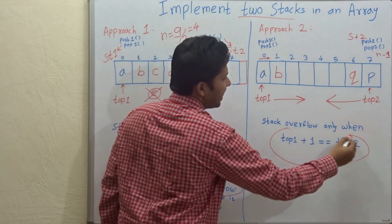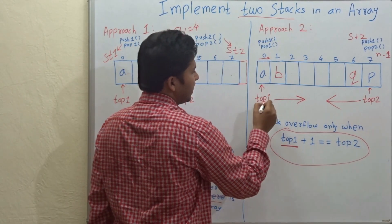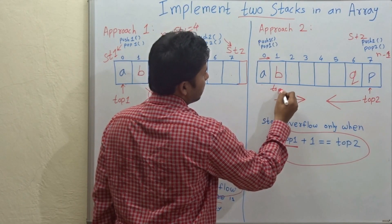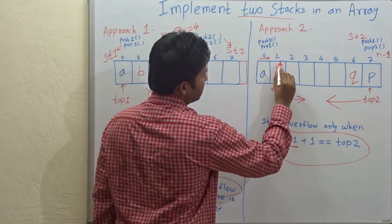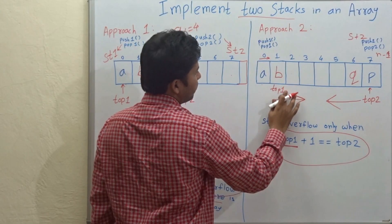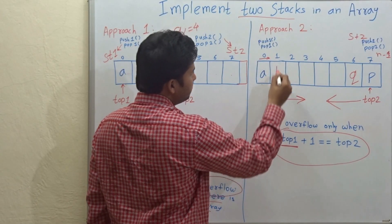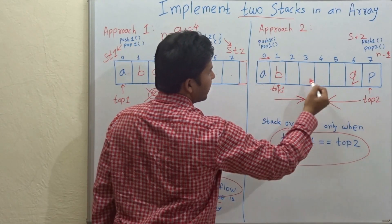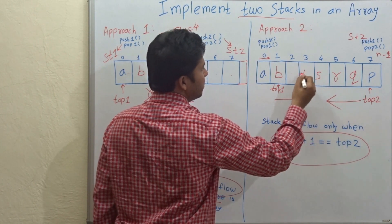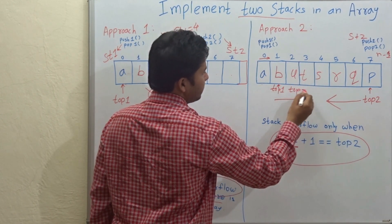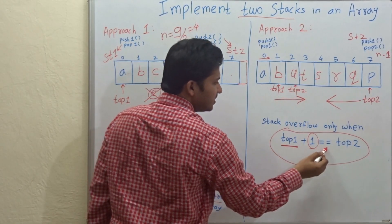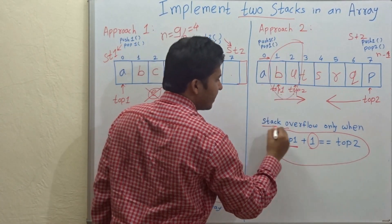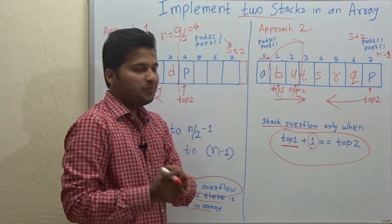And, the stack overflow condition for this array is: if top 1, that is this top, if this top 1 plus 1, means in this case, if top 1 is pointing to B, that is the first cell. And, if we keep on inserting for stack 2, so P, Q, R, S, T and U. So, top 2 is here. So, if top 1 plus 1 is equal to top 2, then we can call it as the stack overflow.